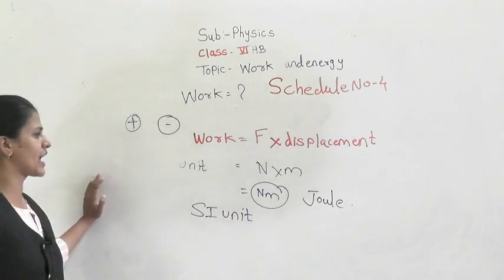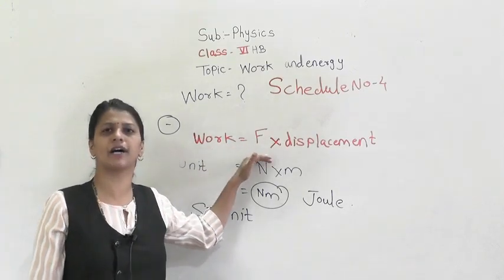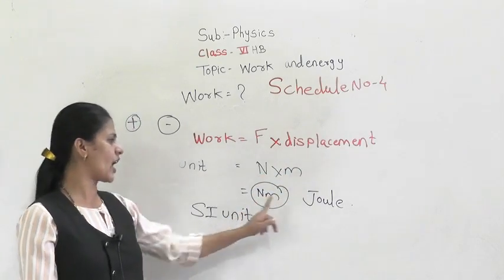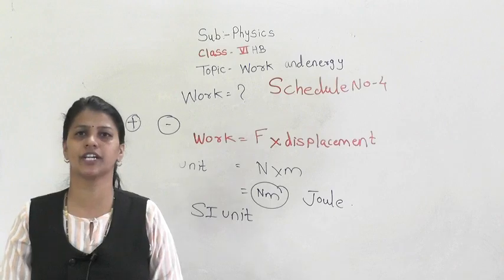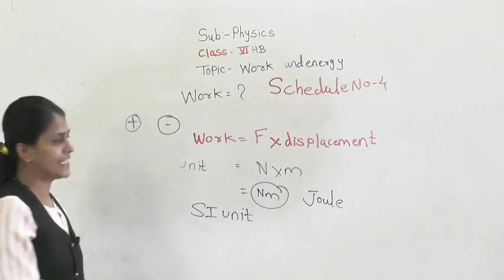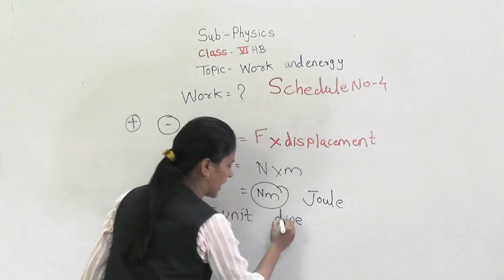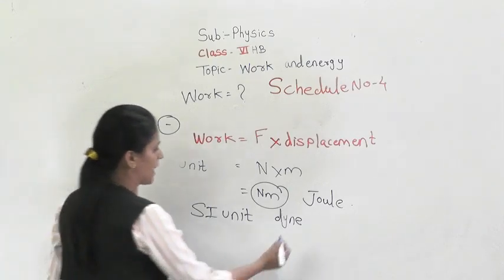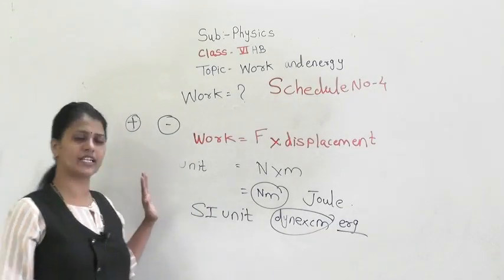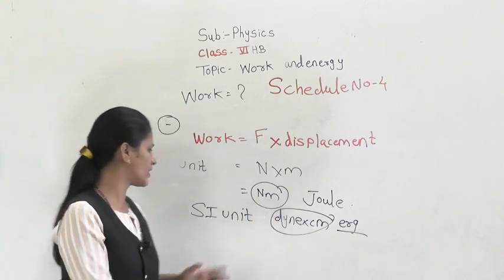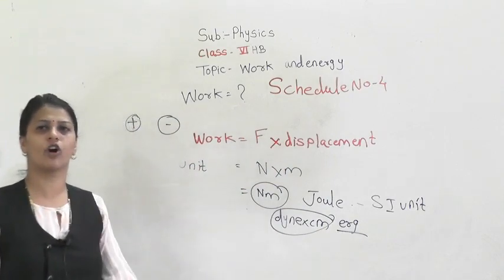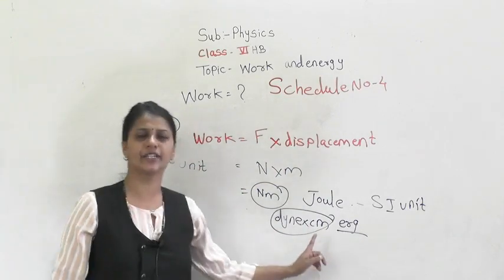Today we have learned the concept of work. Work is nothing but force into displacement. The unit of work is newton into meter, which is called a joule. Now, what is the CGS unit of work? In CGS, force is measured in dyne and displacement in centimeter, so the CGS unit of work is dyne into centimeter, which is called an erg. The SI or MKS unit of work is joule, and the CGS unit is erg.